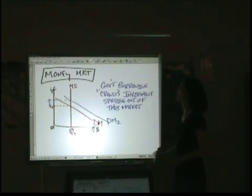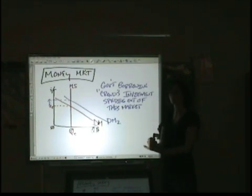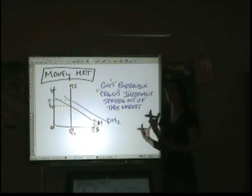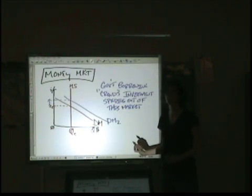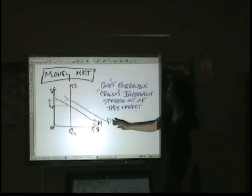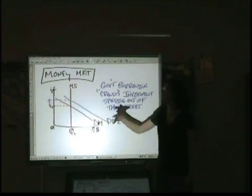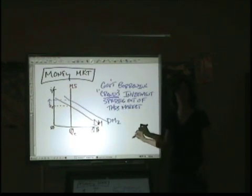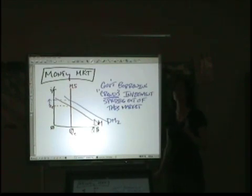Government borrowing crowds investment spending out of the market by driving up the interest rate — for businesses and consumers too, but primarily businesses because investment is going to be much more interest-sensitive than consumption. Government borrowing, by driving up interest rates, pushes or crowds investment out of the market. That's crowding out. That's the kind of question you might see dealing with shifting demand for money.